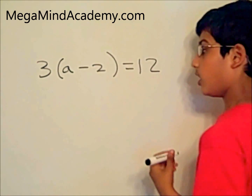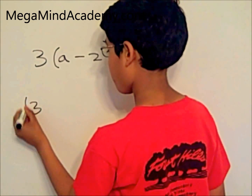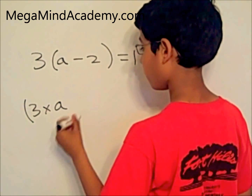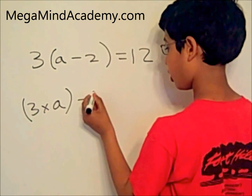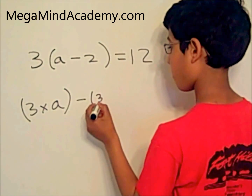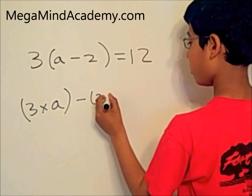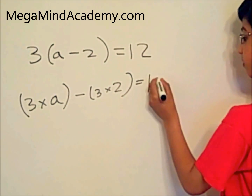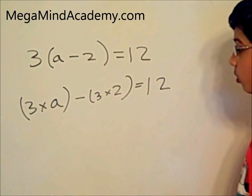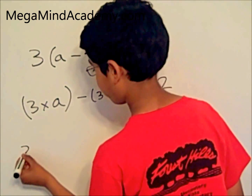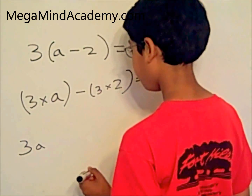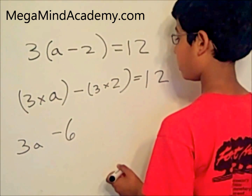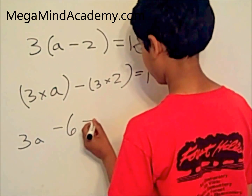Now, 3 multiplied by a, minus 3 multiplied by 2 equals 12. So, that means 3a, which is 3 multiplied by a, minus 6, which is 3 multiplied by 2, equals 12.